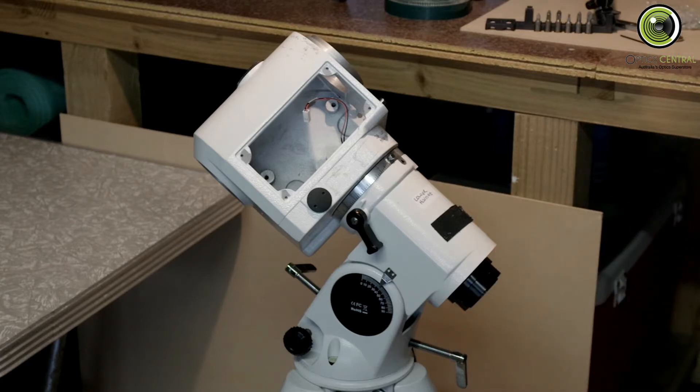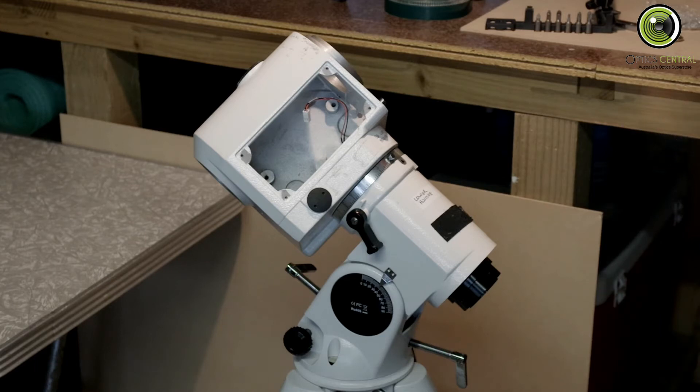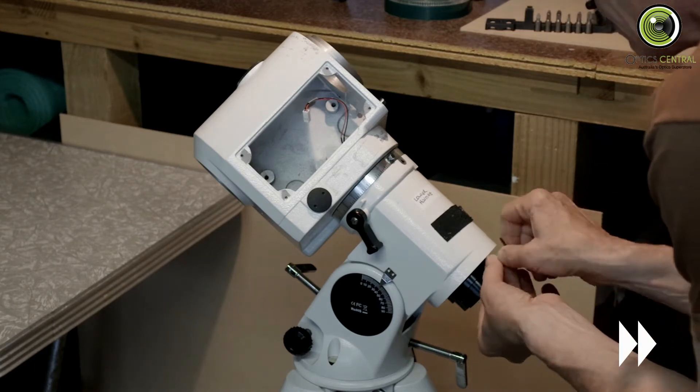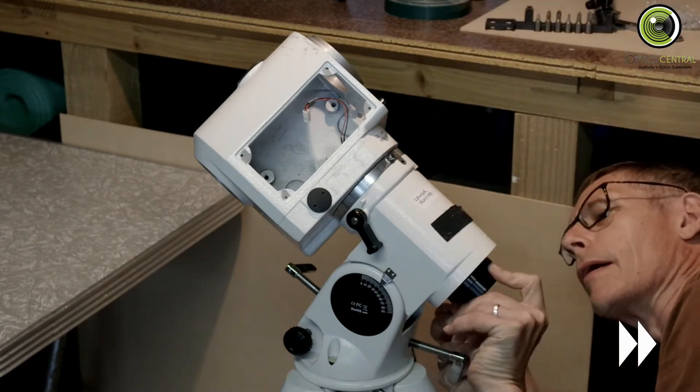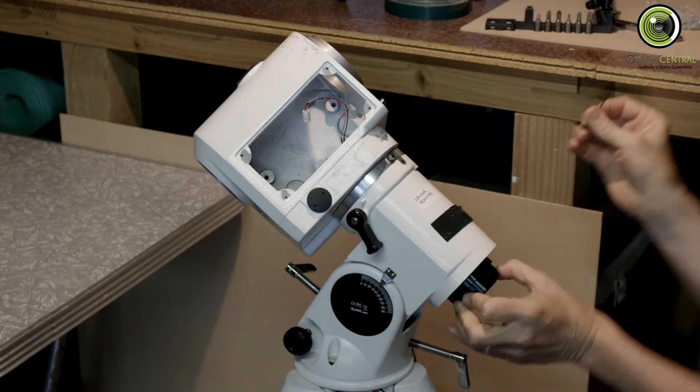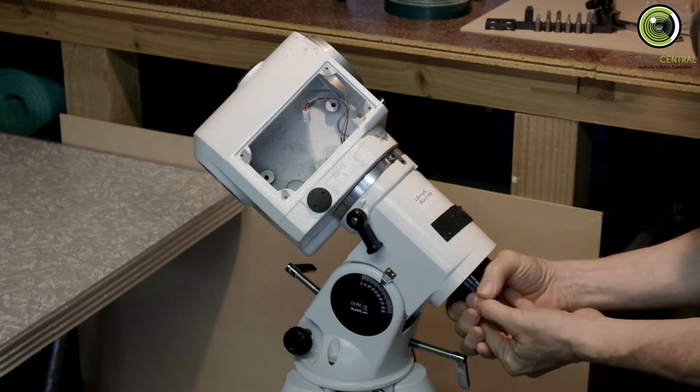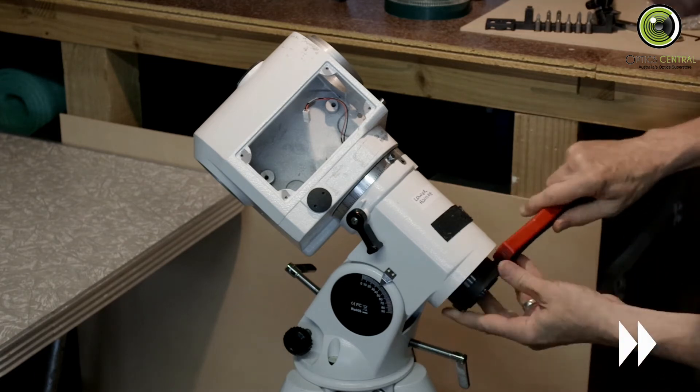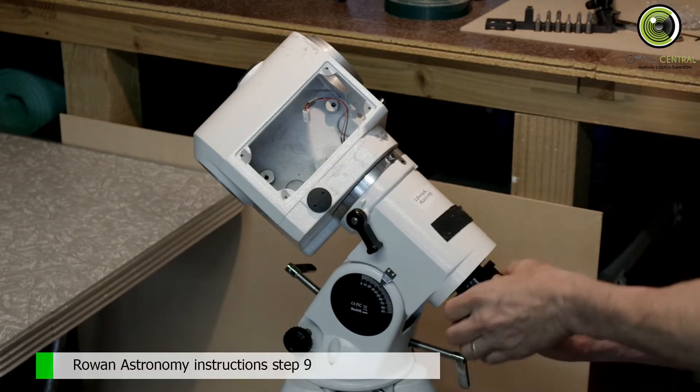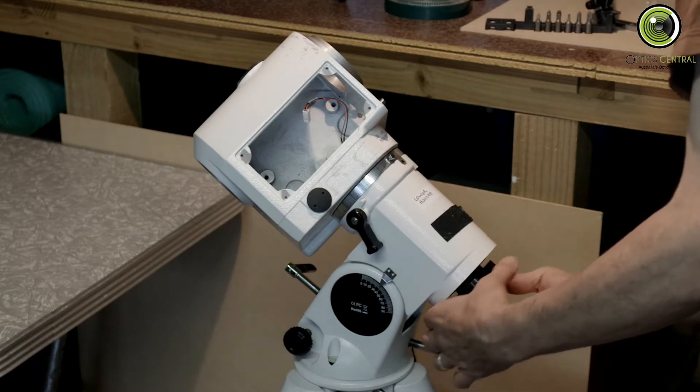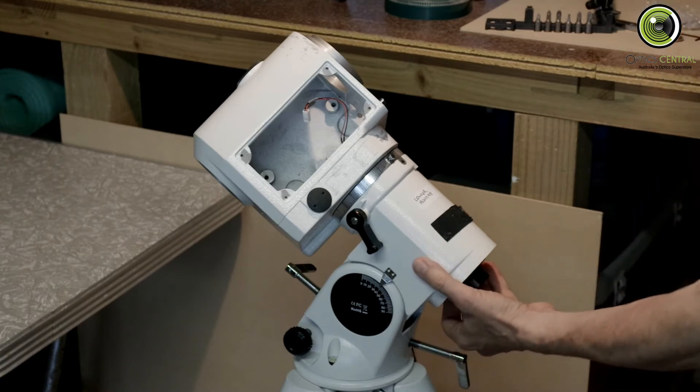And the next section, grub screw. There are four grub screws, I think it's two millimeter. Now, I may need my strap tool for this, or it might just come. Now, behind this I think there is a thrust bearing, so I'm just going to have to be careful that doesn't suddenly come out.